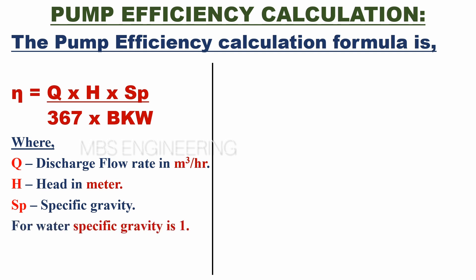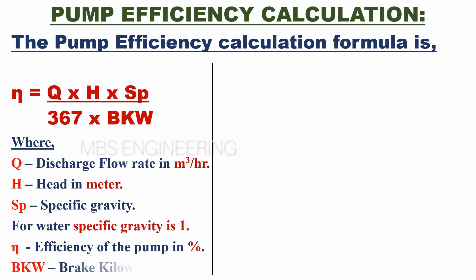Eta is the efficiency of the pump in percentage. BKW is the brake kilowatt in kilowatts.